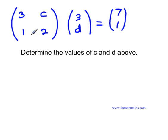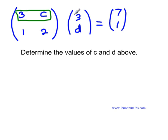We're going to multiply these two matrices. Remember that a row by a column will produce only one entry. We're going to multiply a row of the first matrix by a column of the second matrix, and that would produce one single entry in the resultant matrix.